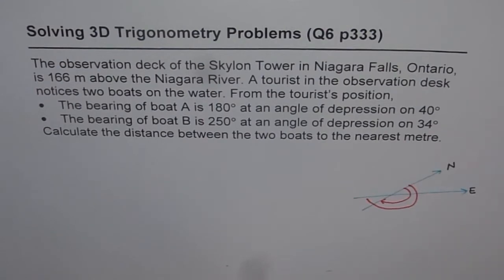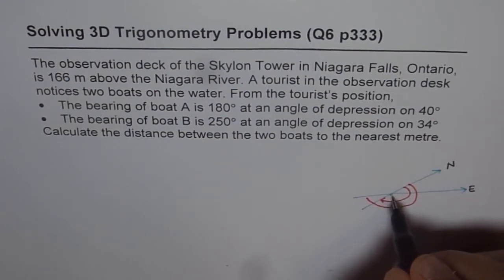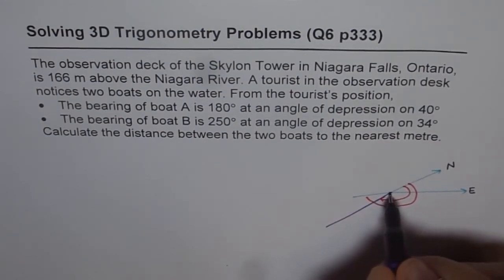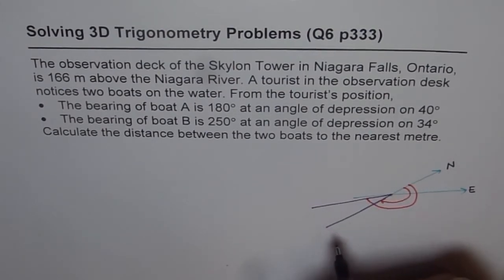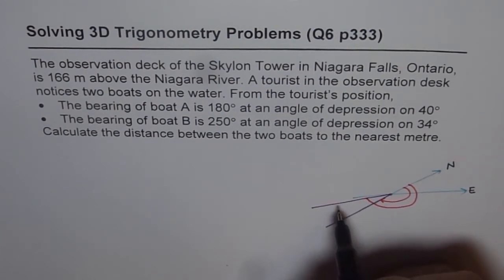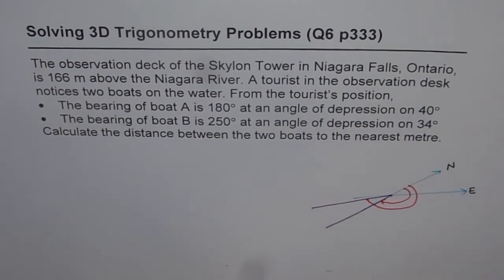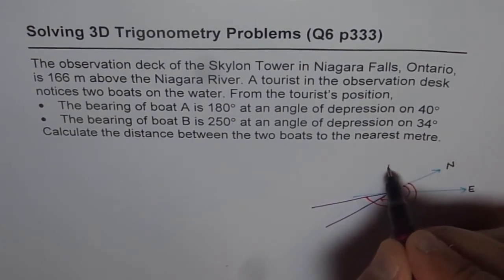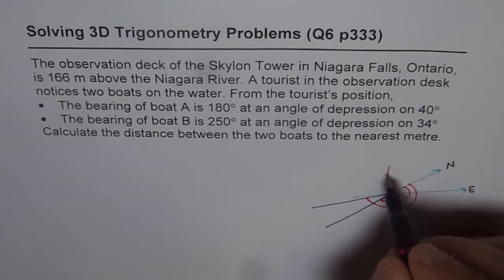Let's draw the location of the boats along these lines. Boat A, which is at a bearing of 180, will be along this line. And boat B will be at a bearing of 250, so that is the line along which boat B will be. How do we find the exact point at which each boat is? That we get from the angle of depression. The tower is given to us with a height of 166 meters, and the observation point is vertically above a point on the horizontal plane.